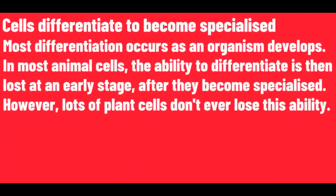Most differentiation occurs as an organism develops. In most animal cells, the ability to differentiate is then lost at an early stage after they become specialized. However, lots of plant cells don't ever lose this ability.